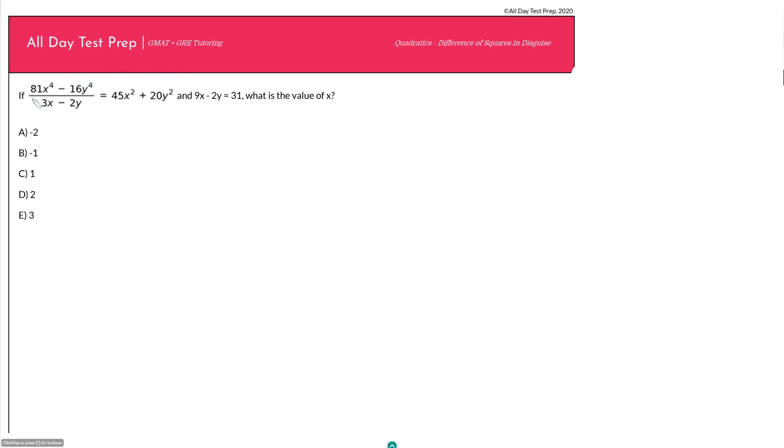So this question says if 81x to the 4th minus 16y to the 4th all over 3x minus 2y is equal to 45x squared plus 20y squared and 9x minus 2y is equal to 31, what is the value of x?